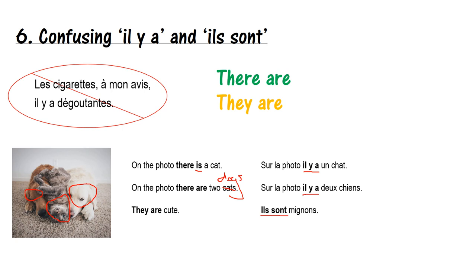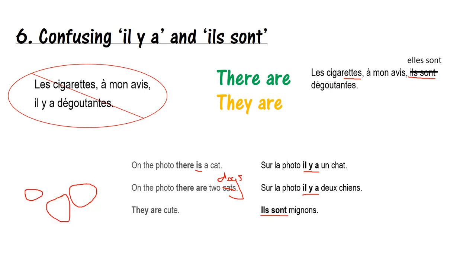Going back to our example: 'les cigarettes, à mon avis, il y a dégoûtantes' needs to change to 'les cigarettes, à mon avis, ils sont dégoûtantes.' However, this still isn't quite accurate. Cigarette has a very common feminine ending — it's actually a feminine word. So instead of ils sont, what are we going to say? Elles sont, super la classe.